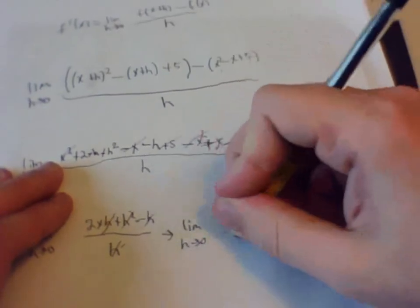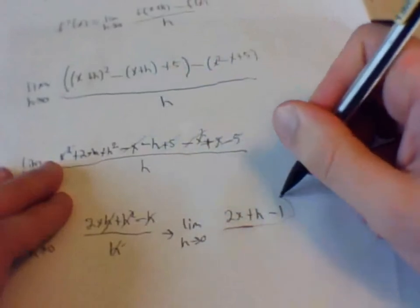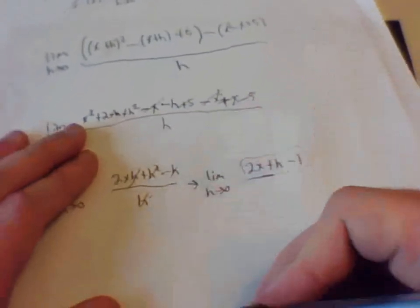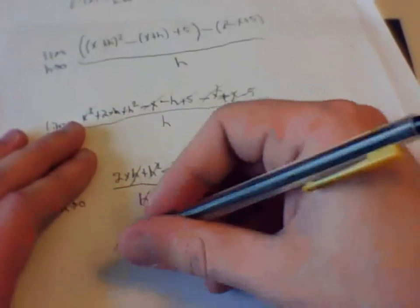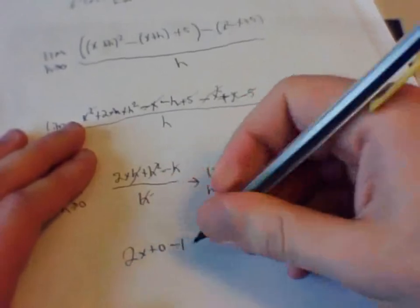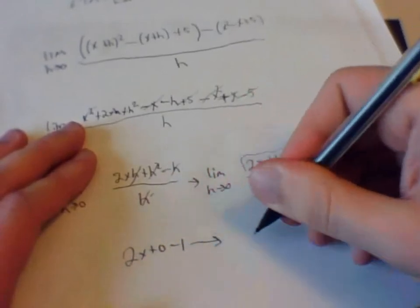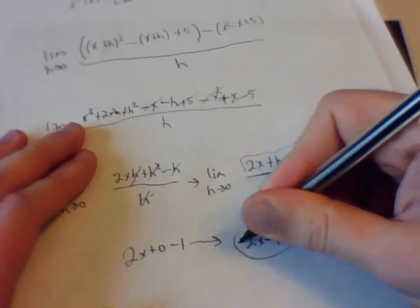Oops. That is what is going to be left right there. So now the last step is to plug in the zero for h. So we are going to have 2x plus zero minus 1, which is going to go to 2x minus 1 as your answer.